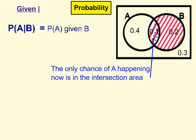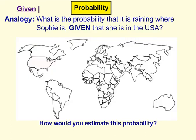If this is sounding strange — how can we be confined to a section of probability space? In the same way that we can with actual space. Let's consider an analogy. What is the probability that it is raining where Sophie is, given that she is in the USA? We might know the weather forecast for the entire world, but actually what we care about is only the weather in the USA.